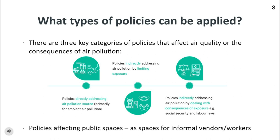Policies relating to air pollution can take different forms. Apart from the three types of policies in this diagram, there is another form of indirect policies relevant to certain groups of workers: those that affect how people use public spaces in polluted areas. For example, whether there are policies promoting cycling, or policies regulating whether vendors can use public footpaths for their stalls — this will affect their exposure to traffic pollution.